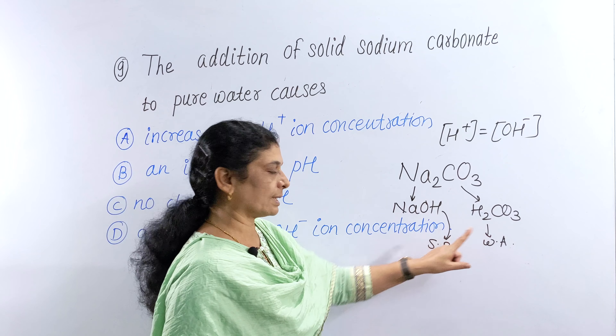Since Na₂CO₃ forms a basic solution when added to pure water, the H⁺ ion concentration decreases and OH⁻ ion concentration increases. Looking at the options: option D says decrease in concentration of OH⁻ — that is incorrect. Option C says no change in pH — that is also incorrect, because both H⁺ and OH⁻ concentrations change, so pH does change. Option A is an increase in pH.